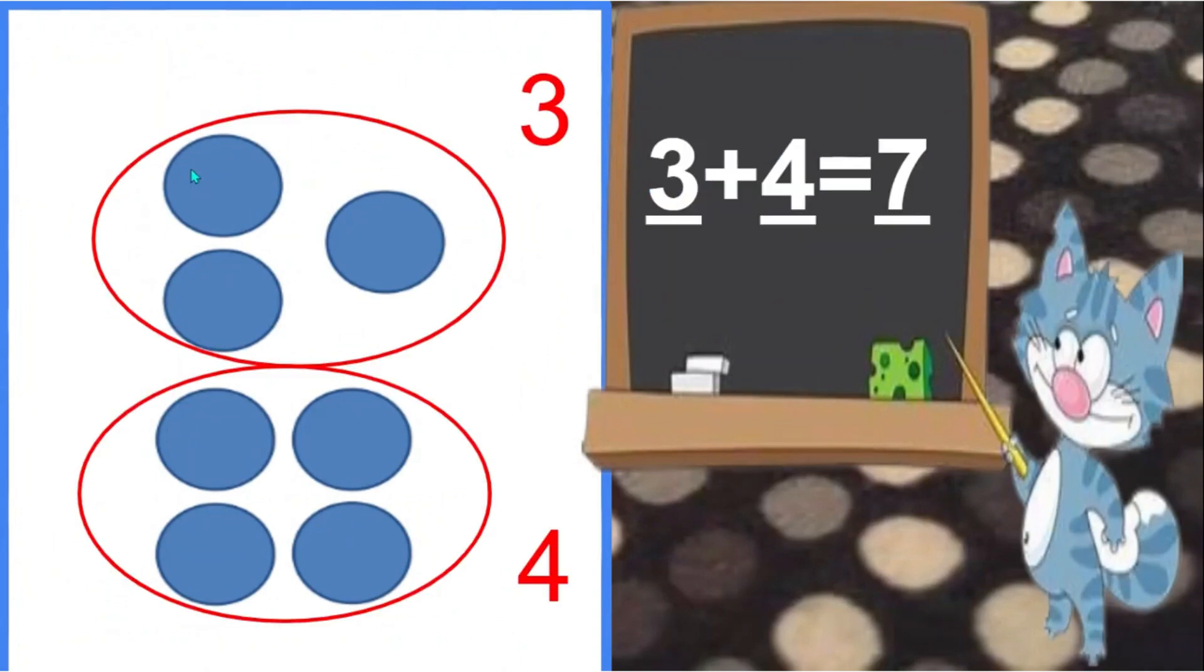I saw a group of three and a group of four dots. Three plus four is seven.